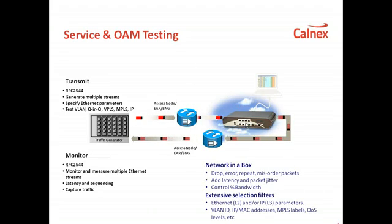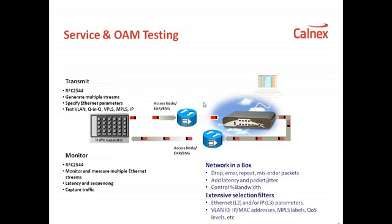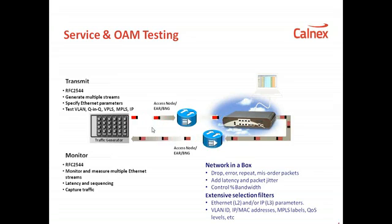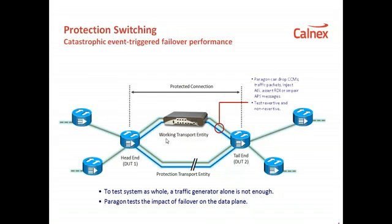For example, we could emulate a delay just on the DMM messages, or we could drop just the CCM messages, and we could then verify that these devices do indeed report correctly. You can also use a traffic generator to generate traffic as well as the OAM packets that then do the monitoring. The Paragon OAM product can also trigger protection switching events to test the protection switching of OAM.